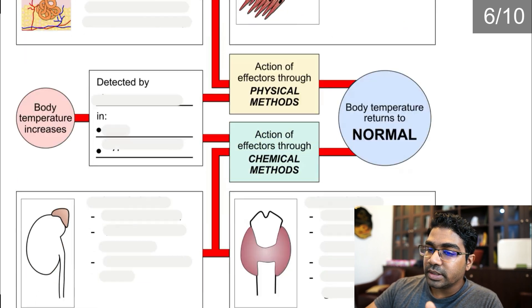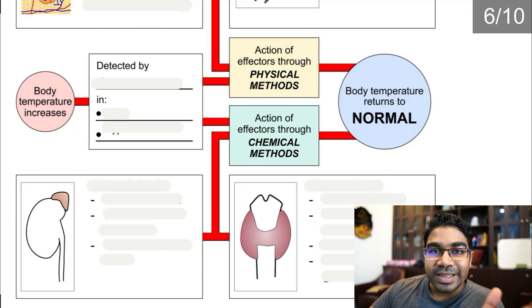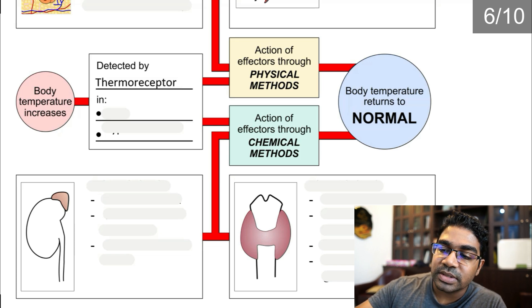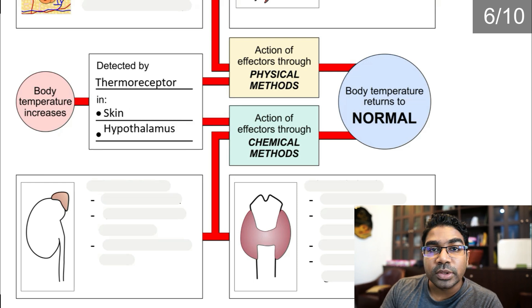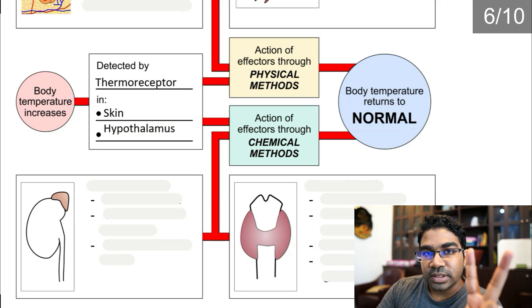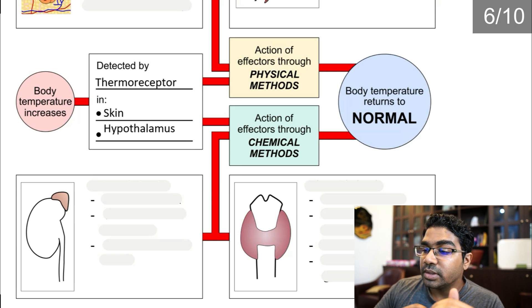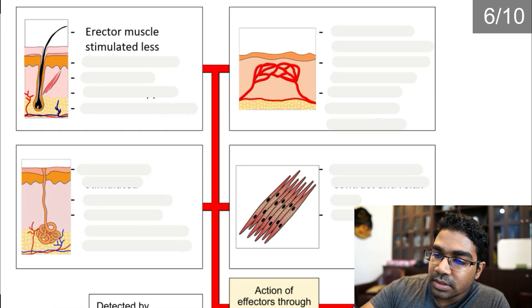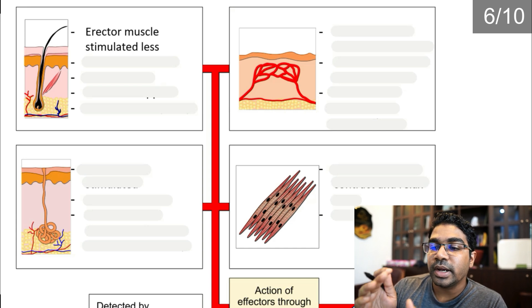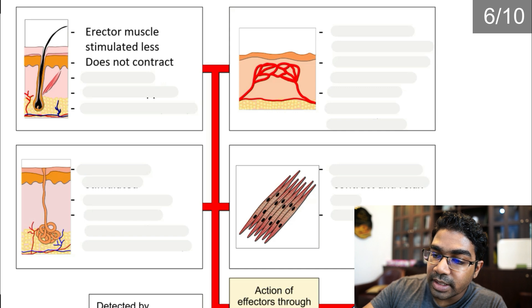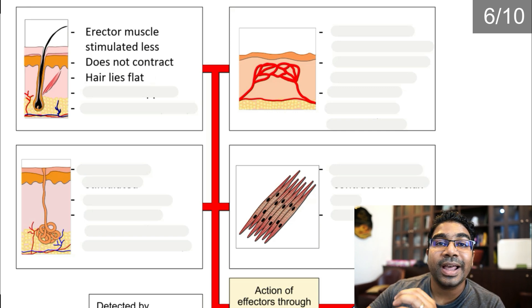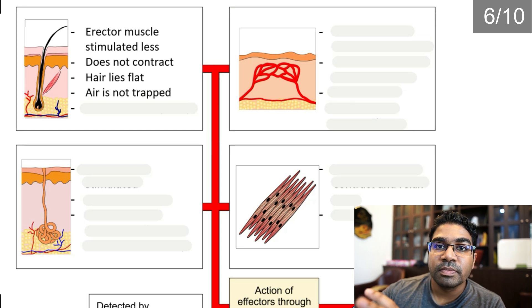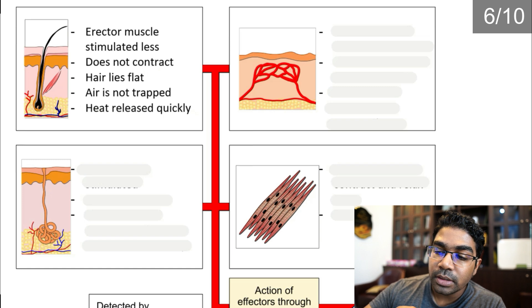Let's look at body temperature regulation. When body temperature increases, it is detected by thermoreceptors located in the skin as well as in the hypothalamus. There are two responses: physical and chemical. For the physical method, the erector muscle is stimulated less, so it doesn't contract. When it doesn't contract, the hair lies flat on the skin and air is not trapped, so there is no insulation and heat is released quickly.